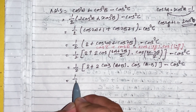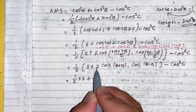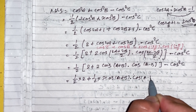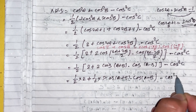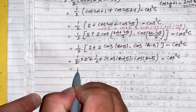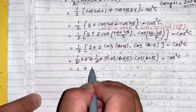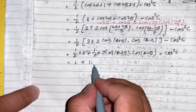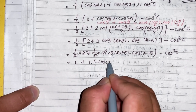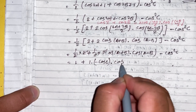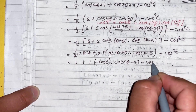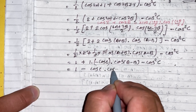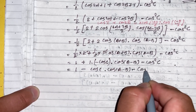Since cos(a plus b) equals minus cos c, substituting gives: minus cos c times cos(a minus b) minus cos square c. Factoring: minus cos c times [cos(a minus b) plus cos c].